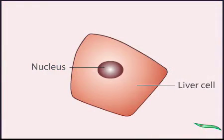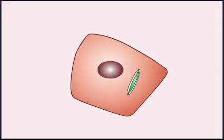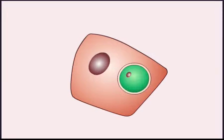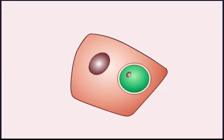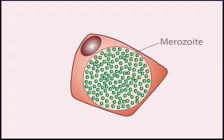A sporozoite enters a liver cell and begins to feed and grow. During the process, the parasite's nucleus divides many times, and then the nuclei bud off to produce thousands of new Plasmodium cells, now in a form called merozoites.